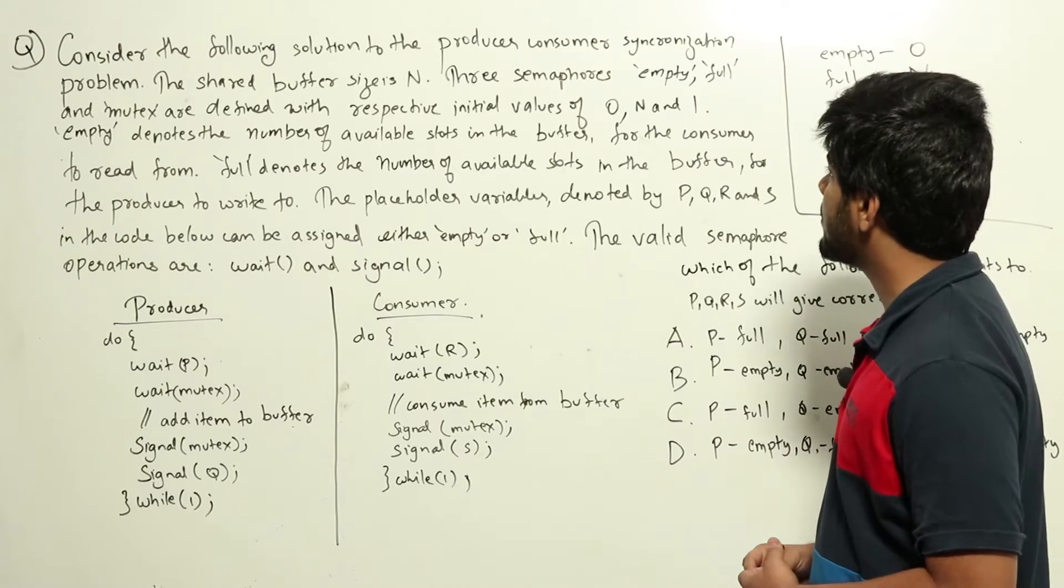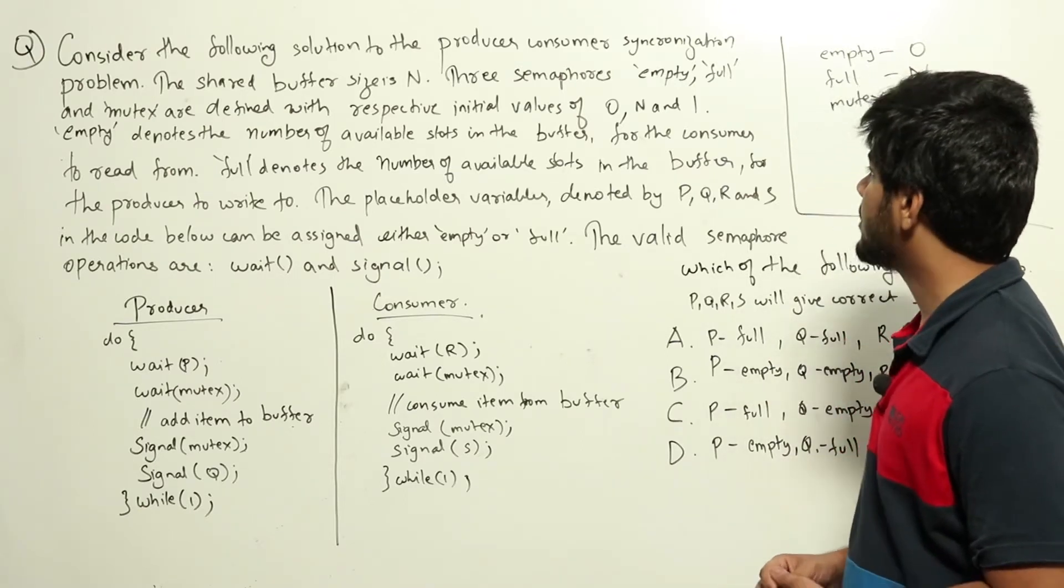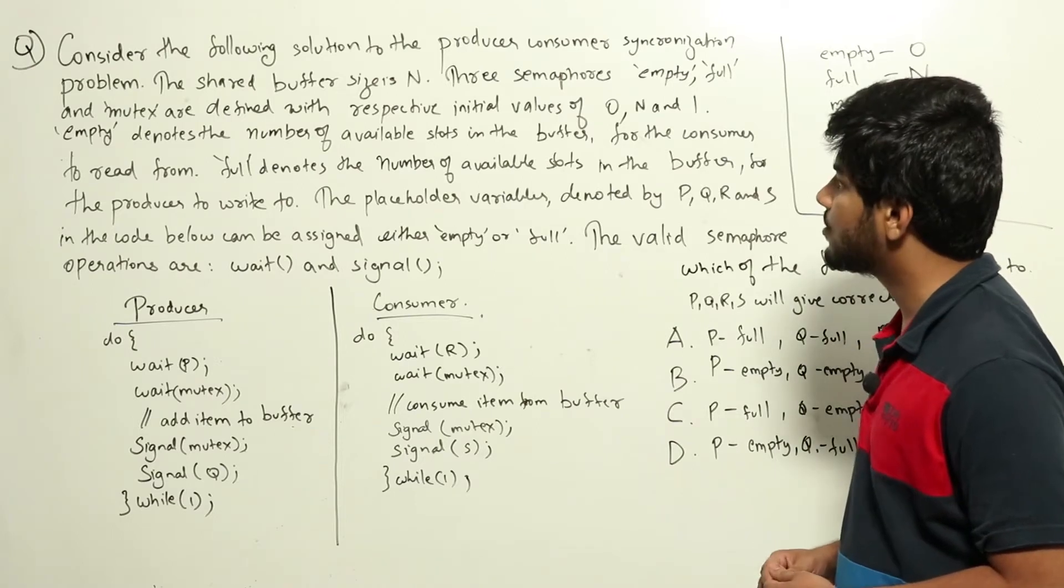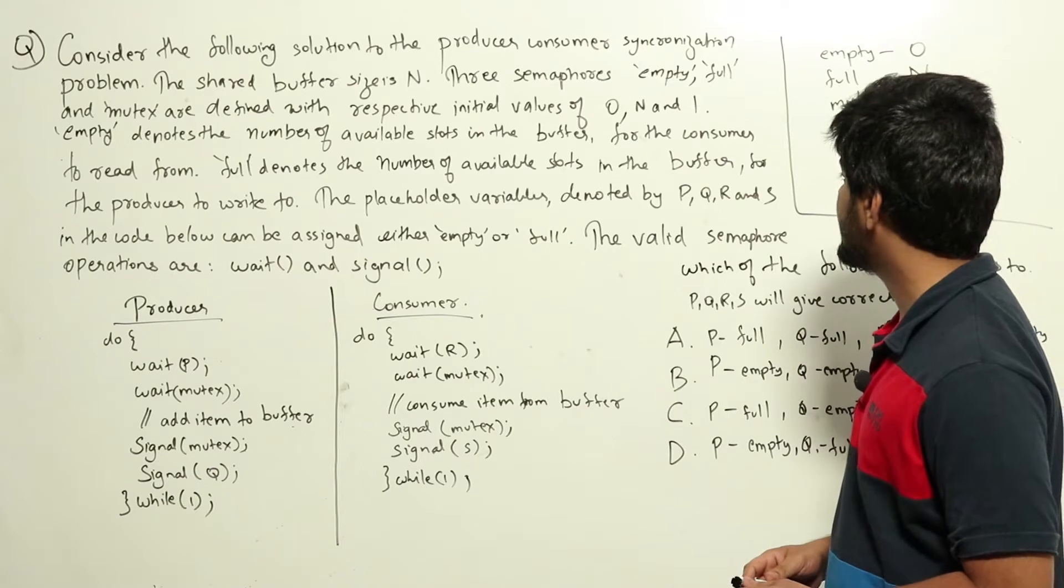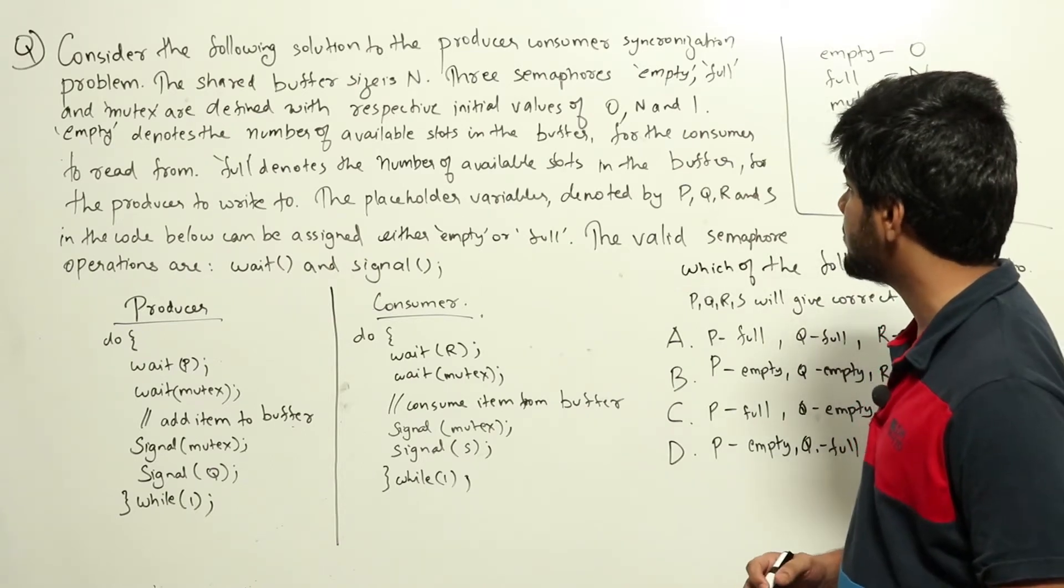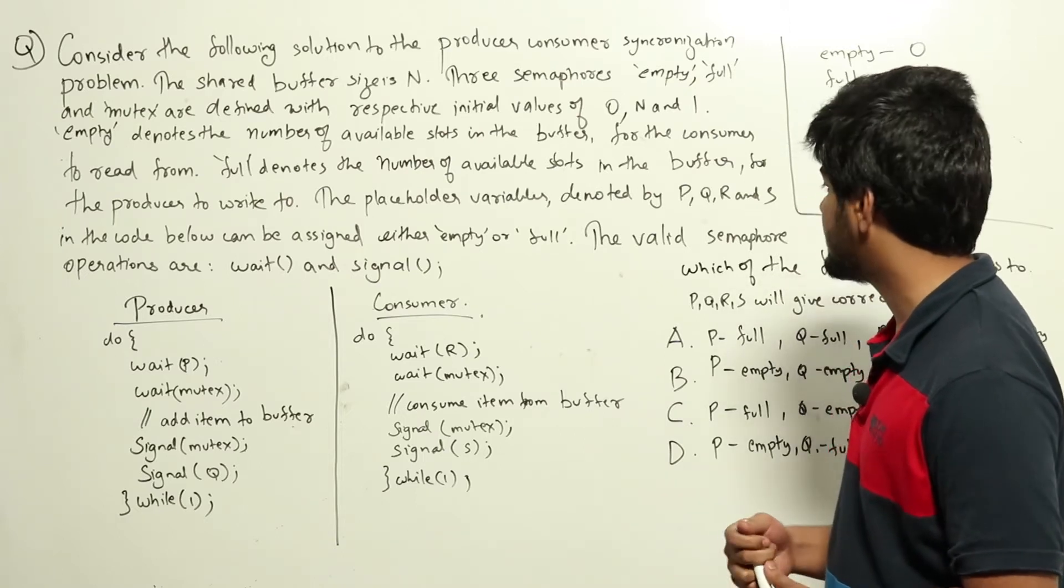Empty denotes the number of available slots in the buffer for the consumer to read from. Full denotes the number of available slots in the buffer for the producer to write to. The placeholder variables denoted by p, q, r and s in the code below can be assigned either empty or full. The valid semaphore operations are wait and signal.